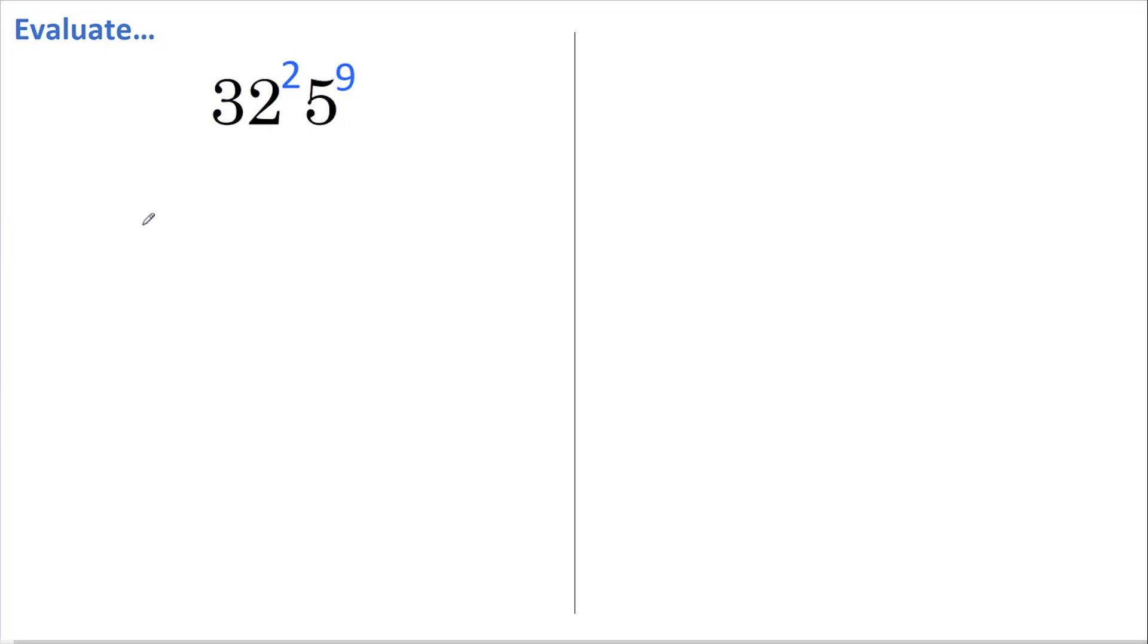Okay, this is how you do it. 32 can be rewritten as 2⁵. Therefore we have (2⁵)² multiplied by 5⁹.